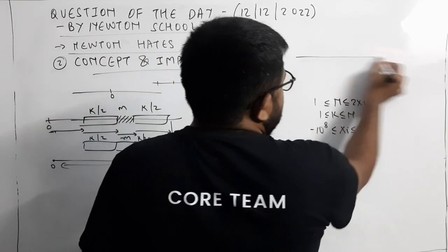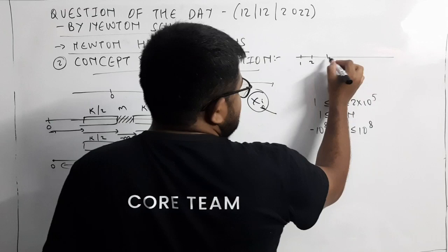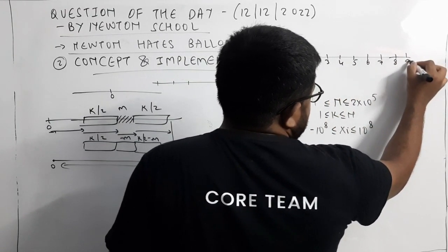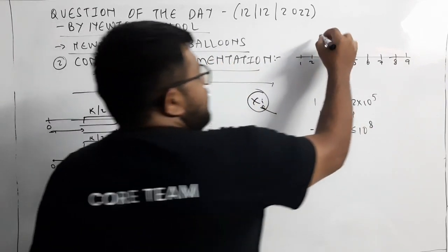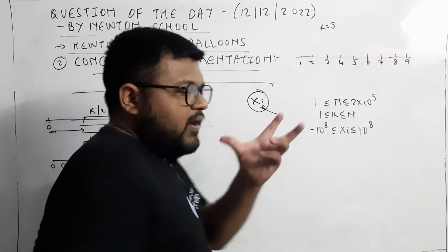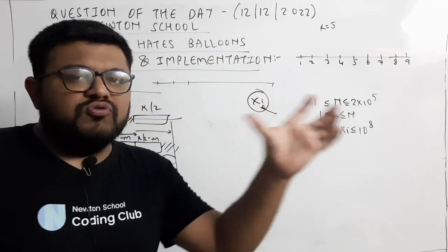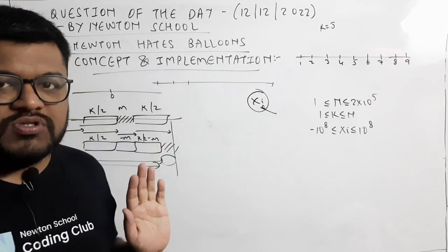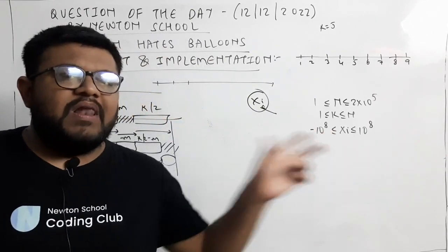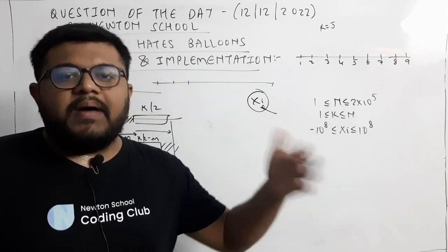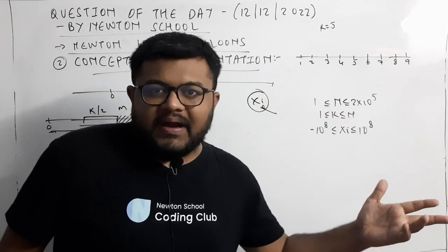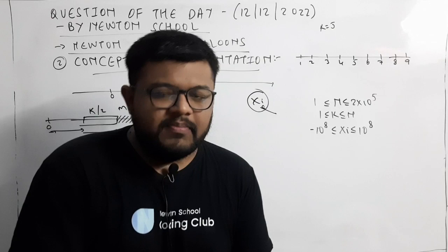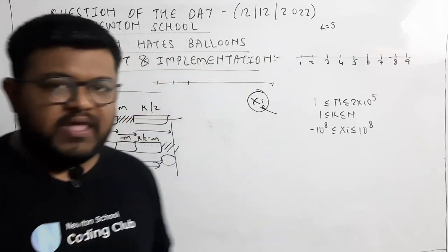जैसे N की value है 9 और K की value है 5, तो हरे continuous 5 balloons के set को देखना पड़ेगा कि उनमें कितना time लगेगा। Continuous क्यों लेना है वो समझ में आ गया है। अब जितने भी continuous possible sets of size K हैं उनको देखना पड़ेगा और देखना पड़ेगा कि उनमें कितना time लगेगा। वो हम linear time में एक for loop की मदद से देख सकते हैं, और उन सब में से जिसमें minimum time लगेगा वो हमारा answer हो जाएगा।